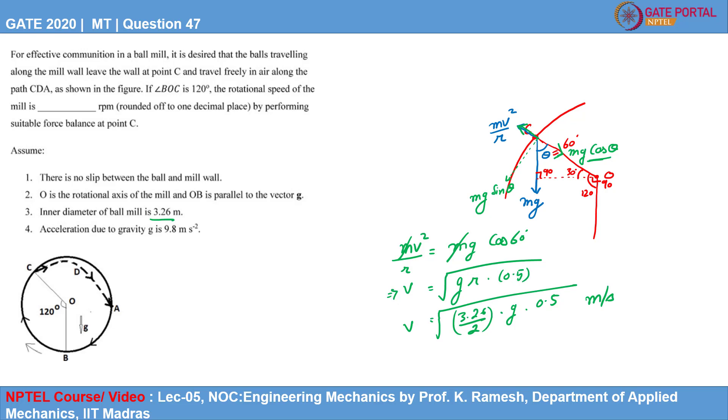Now, we need to find the rotational speed in terms of RPM. The rotational speed and translation speed have this relation: V is R omega, where omega is rotational speed.